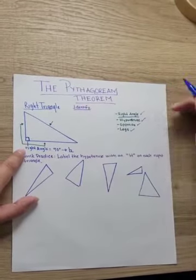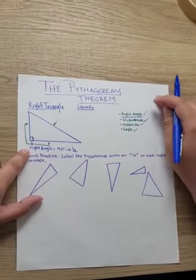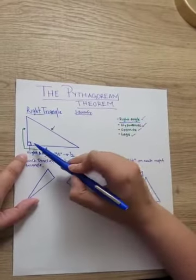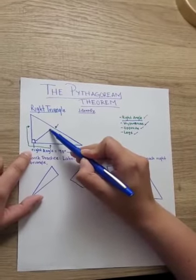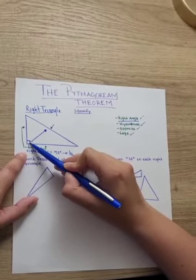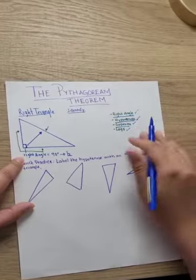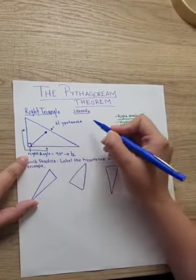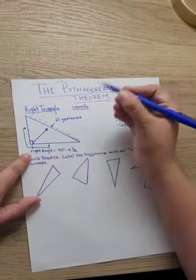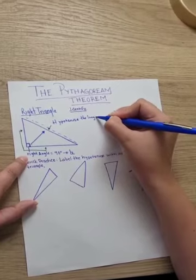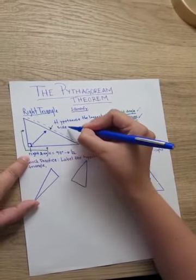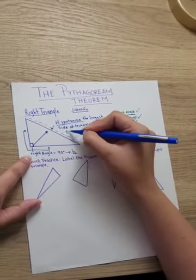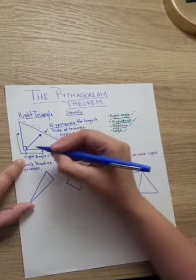Now let's go ahead and identify the hypotenuse. The hypotenuse is always going to be on the opposite side of the right angle. We also found that the hypotenuse is going to be the longest side of the triangle, and yes, it is on the opposite side of the right angle.